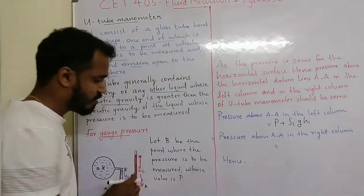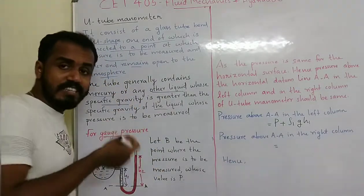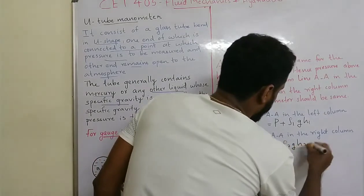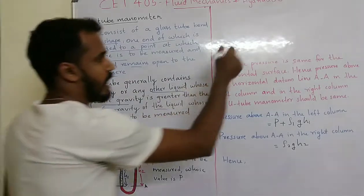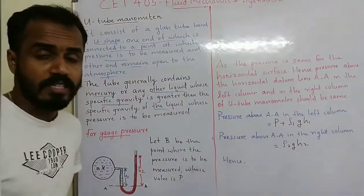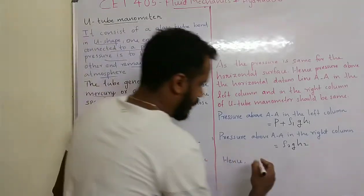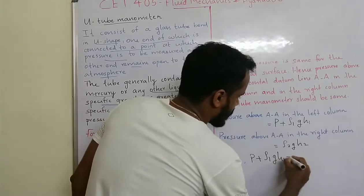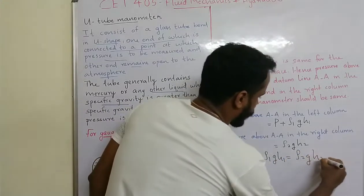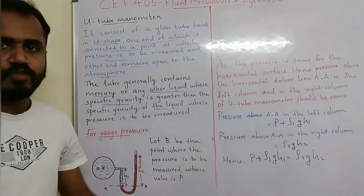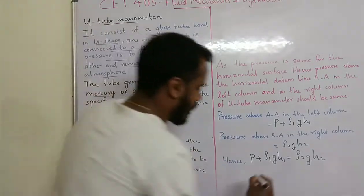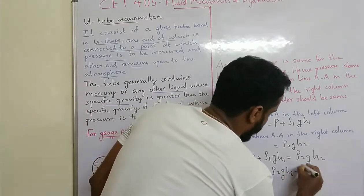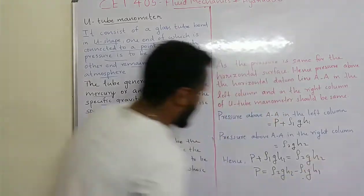On the right side, considering mercury density rho2 and height H2, the pressure is rho2 g H2. Since pressure is the same at the horizontal surface: P plus rho1 g H1 equals rho2 g H2. Therefore, the gauge pressure P equals rho2 g H2 minus rho1 g H1.